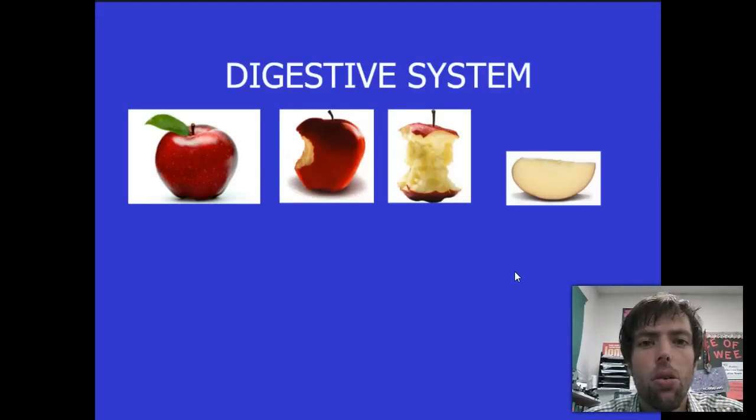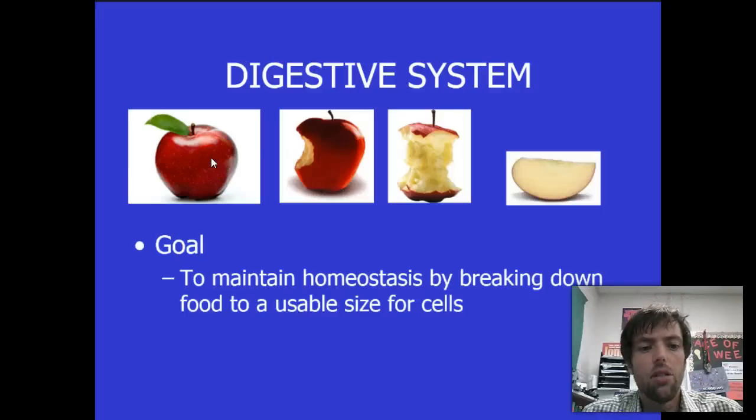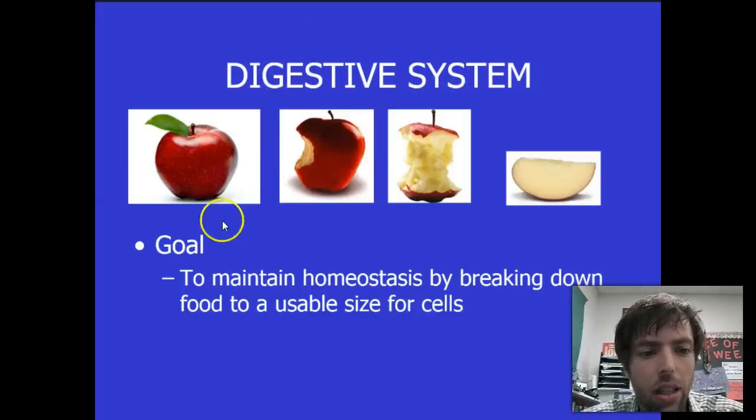Digestive system. Why is this system important, and what is its job? Well, its job is to take these things, yummy apples, and then turn them into something that your cells can use. So, our goal that we're going to write down, the very first thing, so we titled our page Digestive System. We say our goal is to maintain homeostasis.